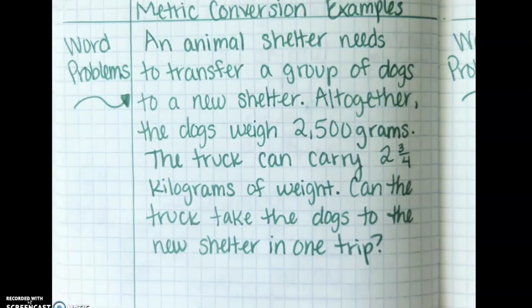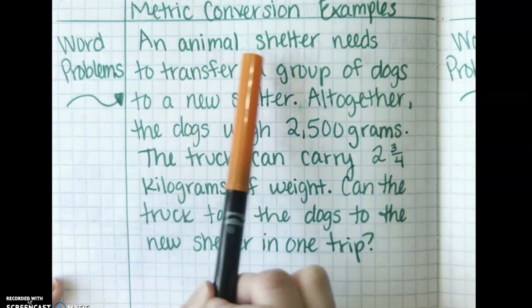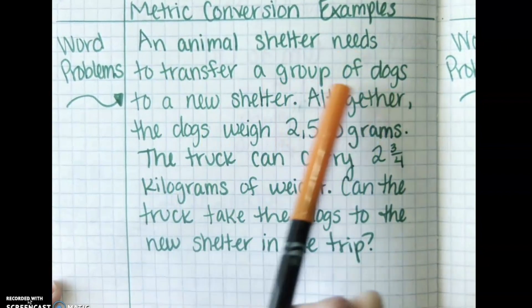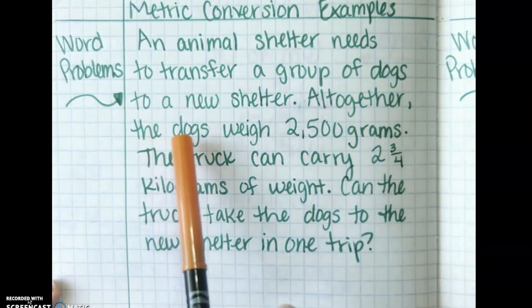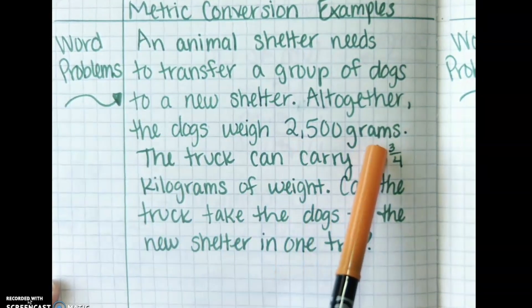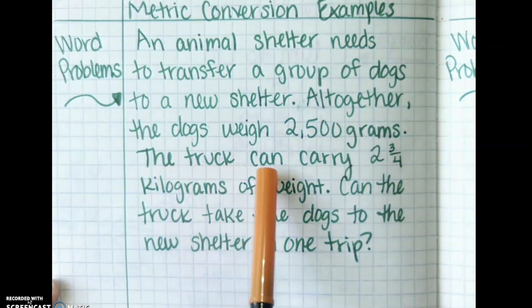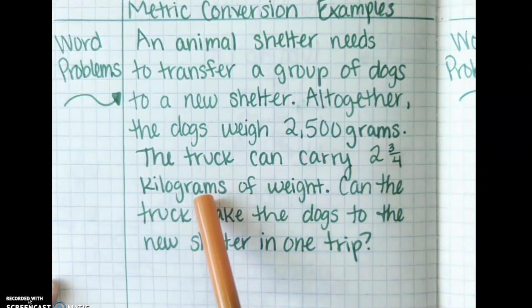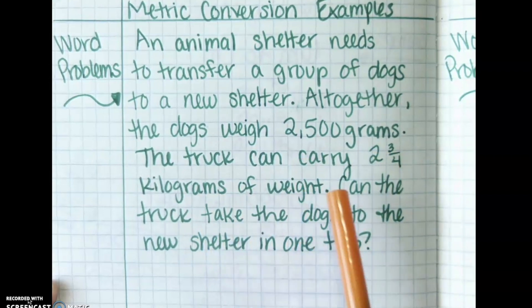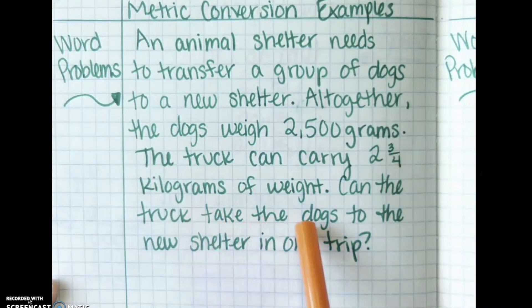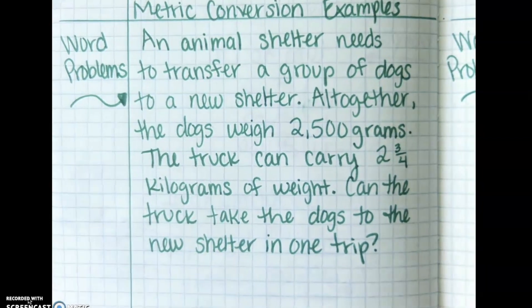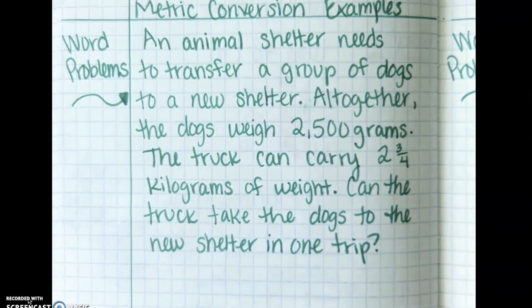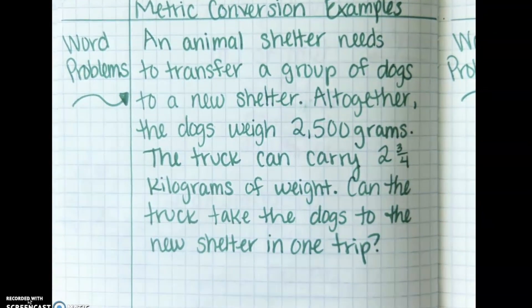Let's read it and then you'll pause the video to figure it out. An animal shelter needs to transfer a group of dogs to a new shelter. Altogether the dogs weigh 2,500 grams. The truck can carry 2 and 3-4 kilograms of weight. Can the truck take the dogs to the new shelter in one trip? Oh interesting. Please pause the video to try to figure this one out on your own.